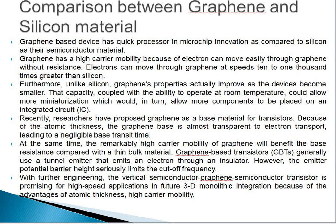Next is the comparison between graphene and silicon material. Graphene-based devices have quicker processors in microchip innovation compared to silicon semiconductor material. Graphene has high carrier mobility because electrons can move easily through graphene without any resistance — electrons can move through graphene at a speed 10 to 1000 times greater than in silicon. Furthermore, unlike silicon, graphene's properties actually improve as the device becomes smaller. That capacity, coupled with the ability to operate at room temperature, would allow more miniaturization of devices, and it allows more components to be placed on one integrated circuit (IC) chip.